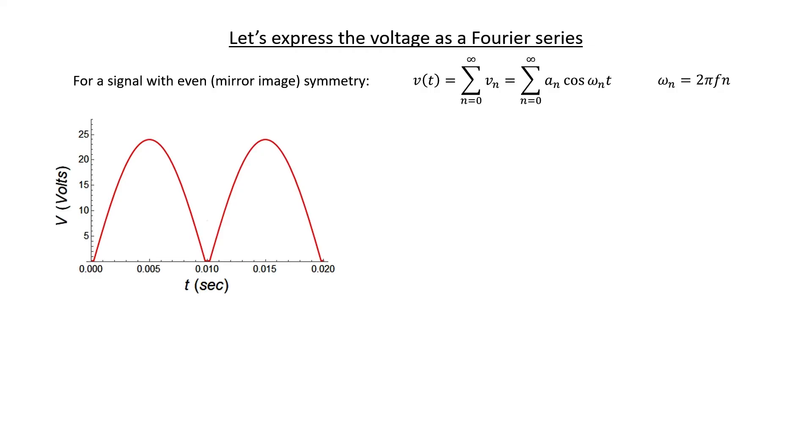We're going to convert this nonlinear source into a sum of sine waves and then use superposition in order to find the output voltage. The first thing we need to do is express this odd-looking signal as a sum of sine waves. We need to use a Fourier series in order to do that.